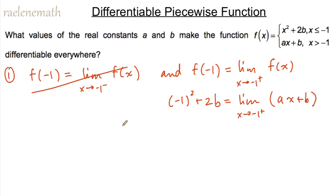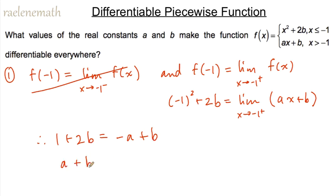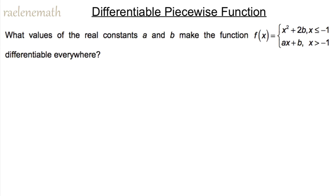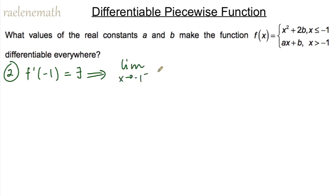This gives the equation: one plus 2b equals negative a plus b. Simplifying, I take a over and subtract b to get: a plus b equals negative one. That is Equation 1. For a second equation I'll use the differentiability condition — f prime of negative one exists — which implies that the left-hand derivative (the left-hand slope from the limit definition) is equal to the right-hand slope.